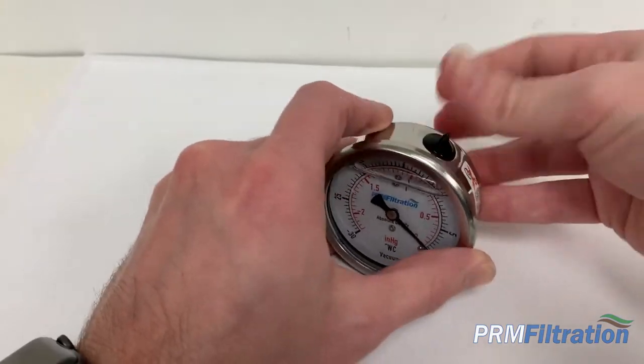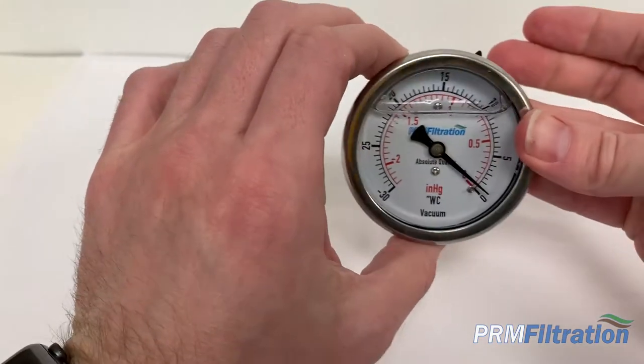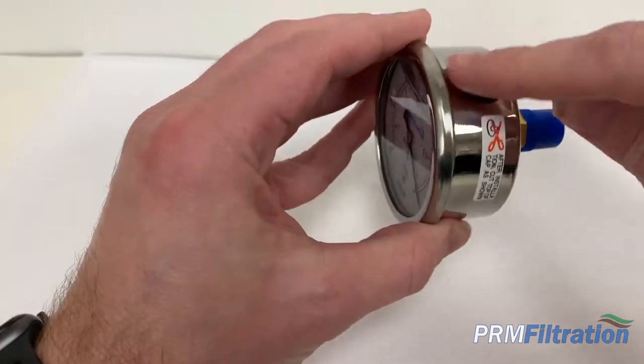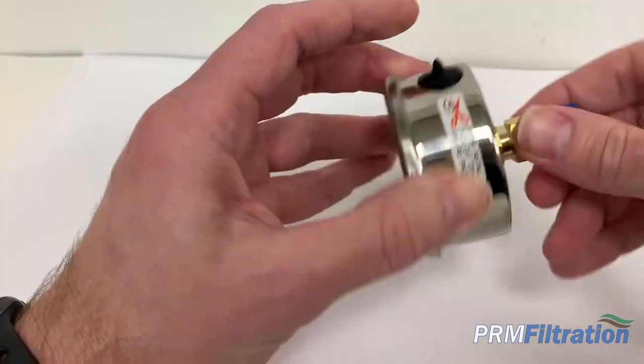Once that is in there, your gauge is ready to go. It's zeroed out, and you have the top on correctly.